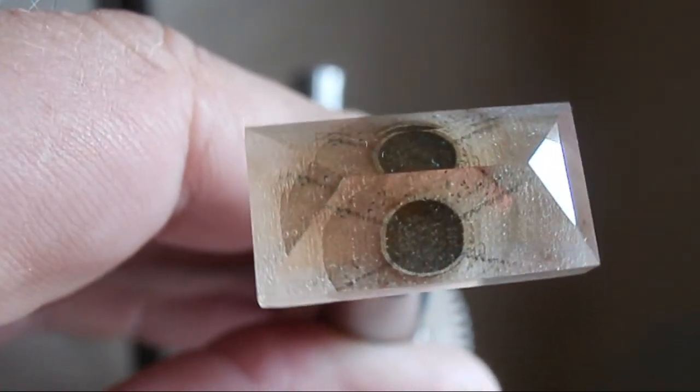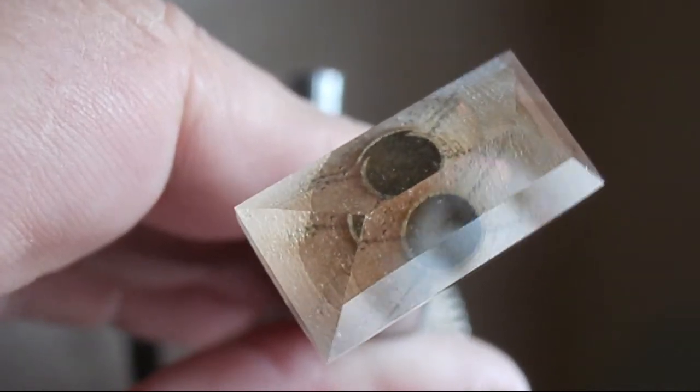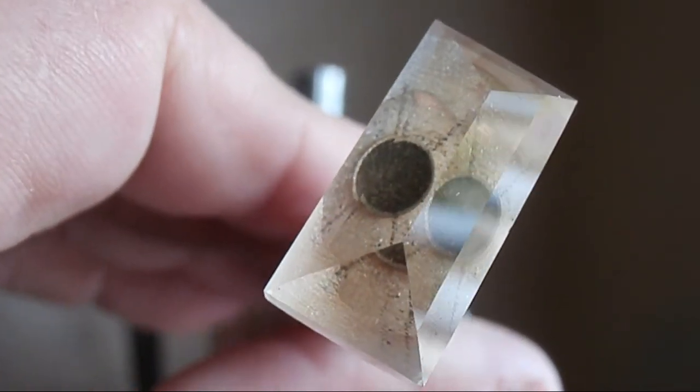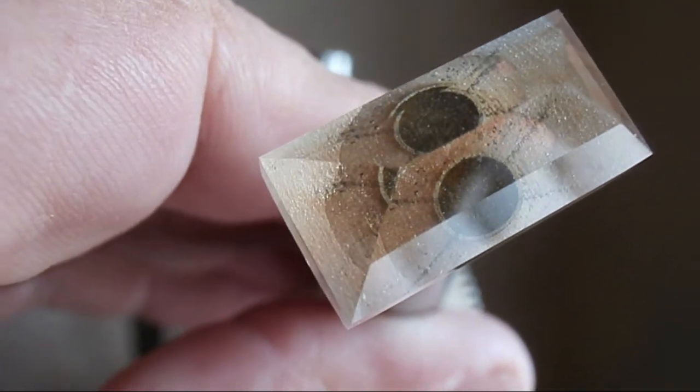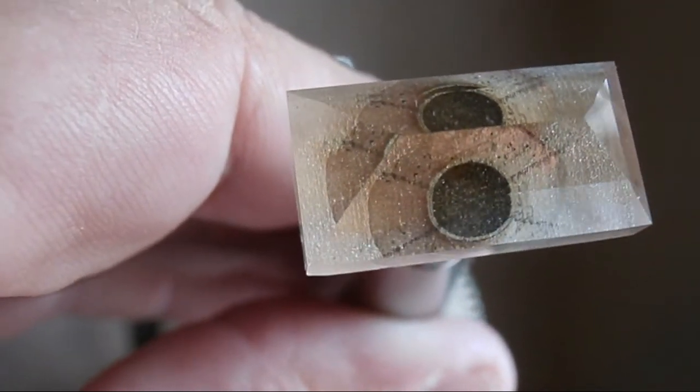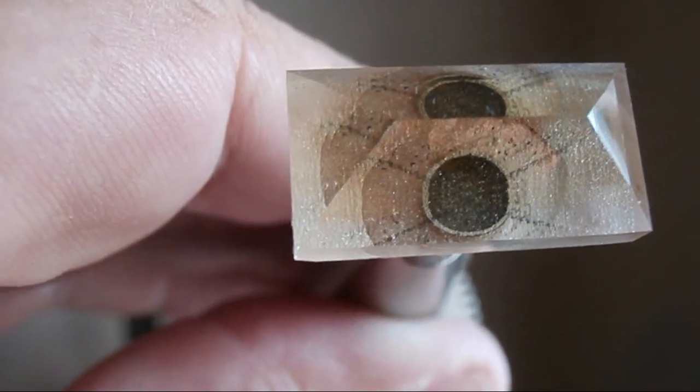I need to flip this over and create the crown and the table and polish that. Hopefully I can get the girdle right because polishing the girdle won't be easy either. On to the next step.